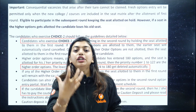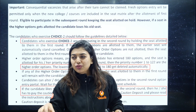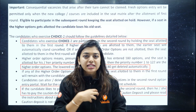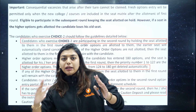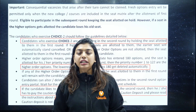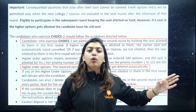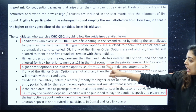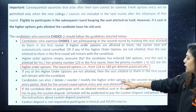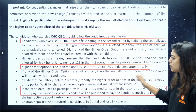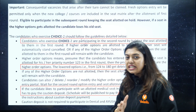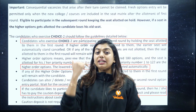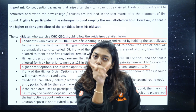Everyone has been trying to explain this — do not confuse yourself, it's not that complicated. Let's say I have been allotted the 120th seat in the first round. Whatever is below 120 will get automatically deleted; whatever is above 120 will be my higher order options. Now, if no higher order options are allotted in the second round, then the seat allotted in the first round will remain with the candidate — meaning if you haven't got anything better than 120, that 120th seat will be your seat.